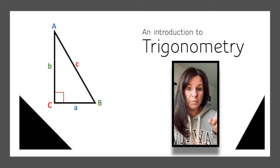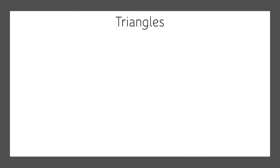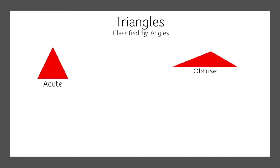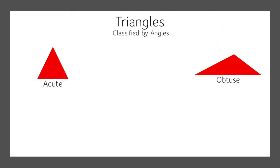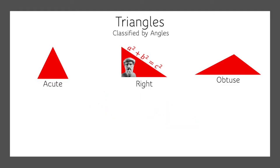First we have to review what we know about triangles. We've been studying triangles, and if you classify triangles by their angles, you can have acute, you can have obtuse, and you can have right triangles. And within the right triangles, we have the 45-45-90 and the 30-60-90 special triangles.